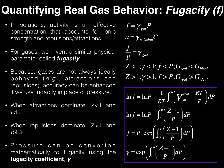Along the same lines, when repulsions dominate the fugacity is greater than the pressure. If we calculate a pressure but the fugacity is actually greater, the gas is behaving as if it's at a higher pressure than theoretically calculated — implying more repulsions within the gas. That net repulsion between all the particles causes them to collide with more force, meaning more pressure overall. So when fugacity is greater than the theoretically calculated pressure, repulsions dominate. This gives us a second way to assess whether attractions or repulsions dominate, apart from using the compression factor.